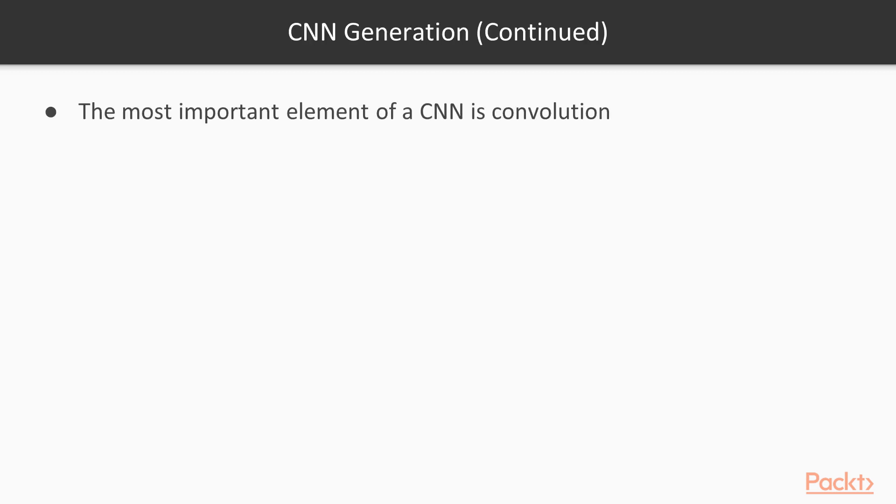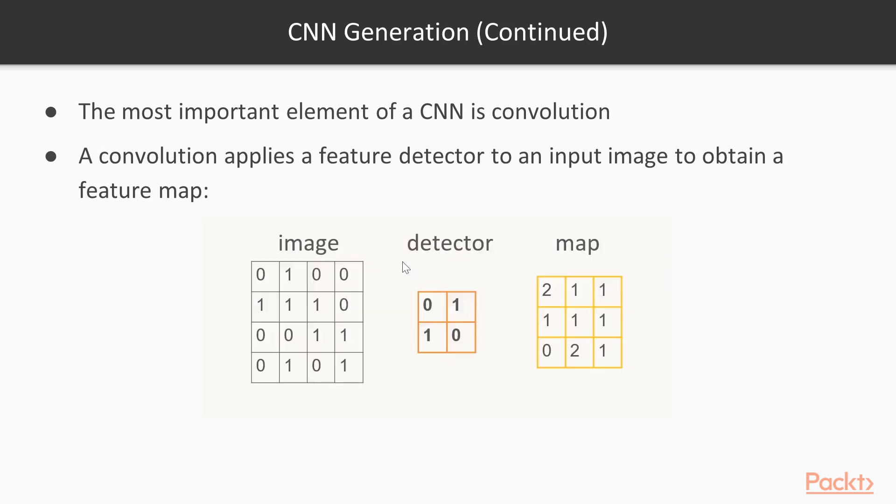The most important element of a CNN is the convolution operation. A convolution applies a feature detector to an input image to obtain a feature map. Here is how it works.